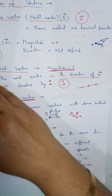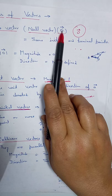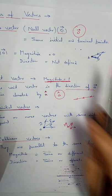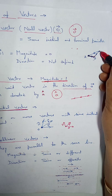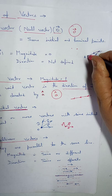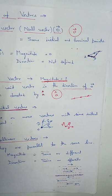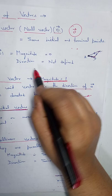Now, what are the types of vectors? The first type is the zero vector or null vector, denoted with a zero and an arrow sign. Zero vector has the same initial and terminal point — for example, if we go from A to B to C and return back to A, this becomes a zero vector. It has no magnitude — magnitude is zero — and direction is not defined.